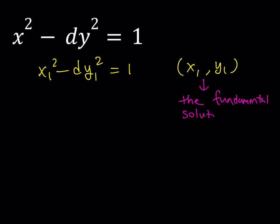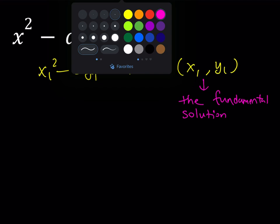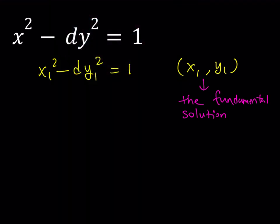Here's the idea: if you can find x1, y1, which is the fundamental solution, then you can find all the other solutions. We're going to take this expression — even though d is not a perfect square, we can still factor it, not over the field of integers, of course. We're going to use a different field.